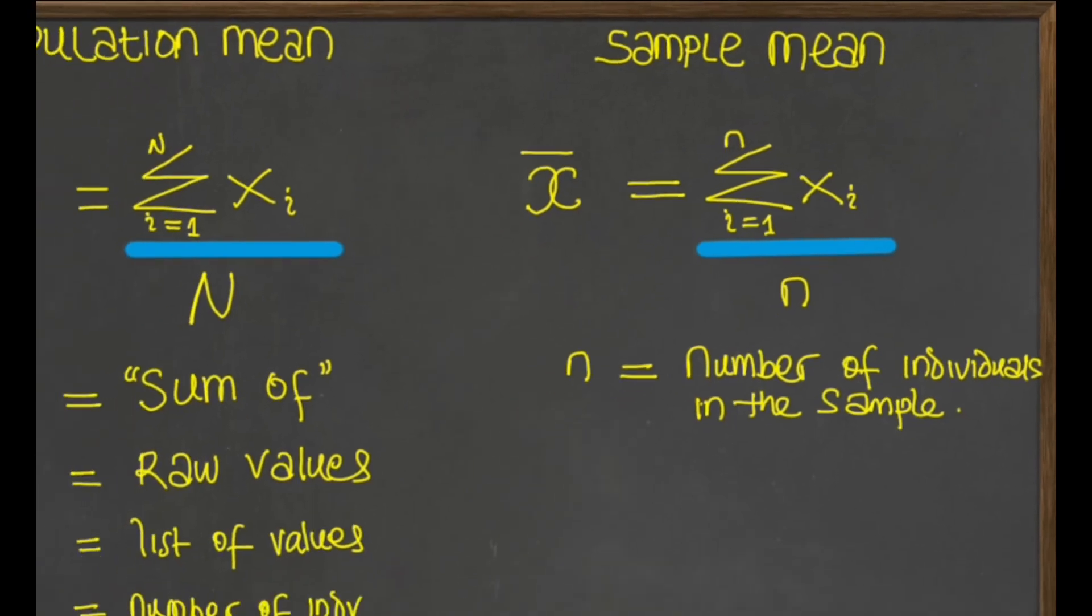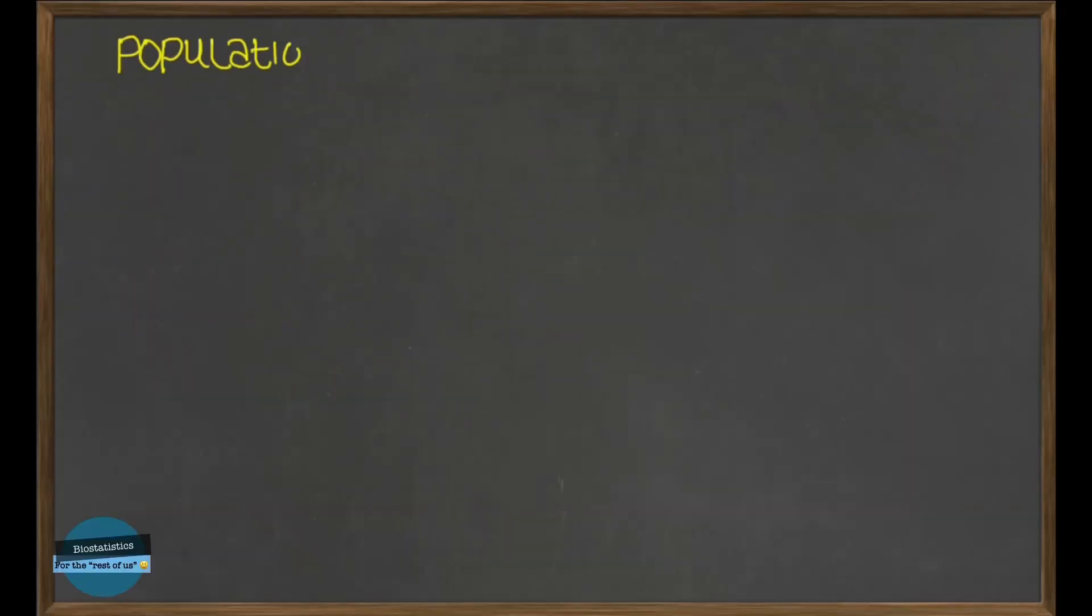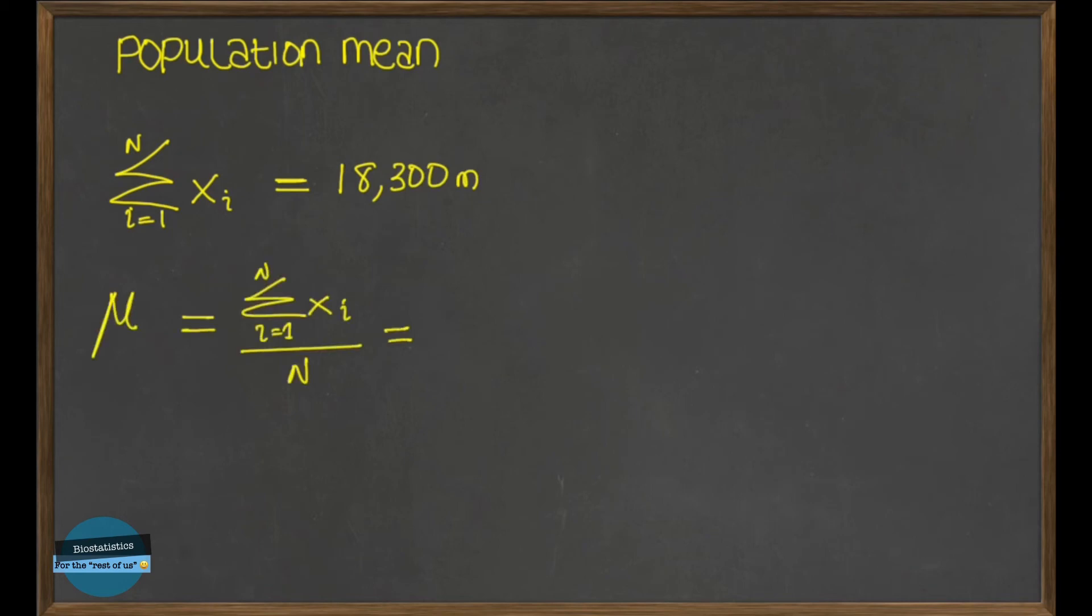Easy peasy, right? So for the population mean, assuming the sum of all the heights in the population of 10,000 people in Samaru community is 18,300 meters. So applying this formula, we will have 18,300 divided by 10,000, and that will be equal to 1.83 meters. So the population mean height is 1.83 meters, right?